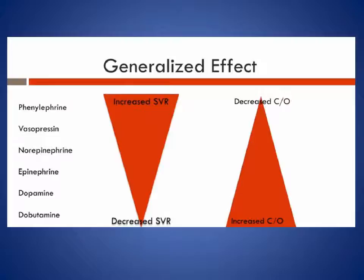Dopamine is no longer in widespread use, certainly in the United Kingdom. It does have significant inotropic effects, but it's associated with more side effects than the other inotropes, and there's no evidence that it has the renal protective effect that it was used for in the past. Phenylephrine is also not mentioned here as it's not in common use in UK critical care.